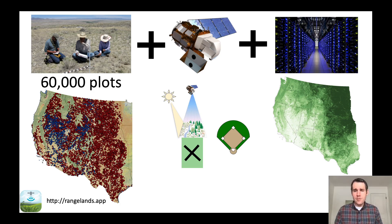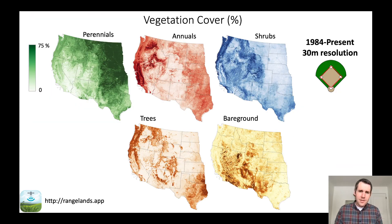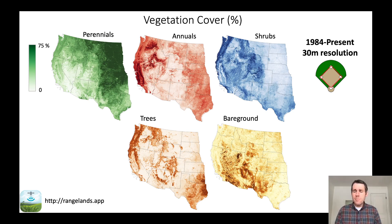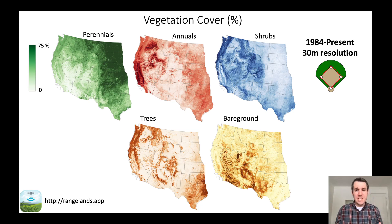These maps are available at a medium to fine resolution of approximately 30 meters. To put that in context, 30 meters is about the size of a baseball diamond. RAP provides an estimate of continuous vegetation cover from 0 to 100% for the following functional groups: perennial forbs and grasses, annual forbs and grasses, shrubs, trees, and bare ground. We produced these estimates across the entire western United States from 1984 to present. If you're wondering how many baseball diamonds fit in the western United States — it's about five and a half billion — and for each one of those, we have an estimate of continuous vegetation cover.